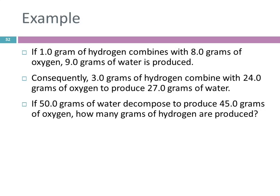Here's an example, a couple of examples, of conservation of mass. If 1.0 grams of hydrogen combines with 8.0 grams of oxygen, we see that 9.0 grams of water is produced.